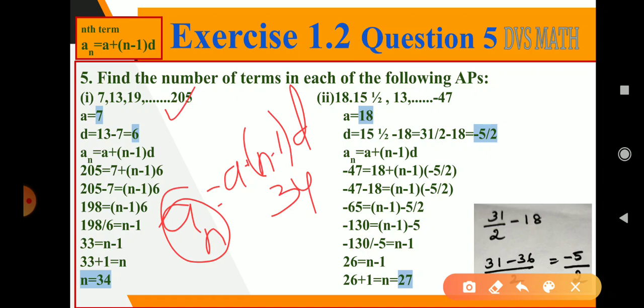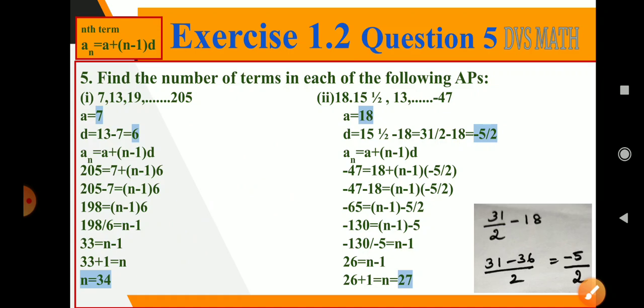If the n value is 34, then that's its value will be 205. Next, second question in the sub question: 18, 15 and a half, 13, so on, up to minus 47.